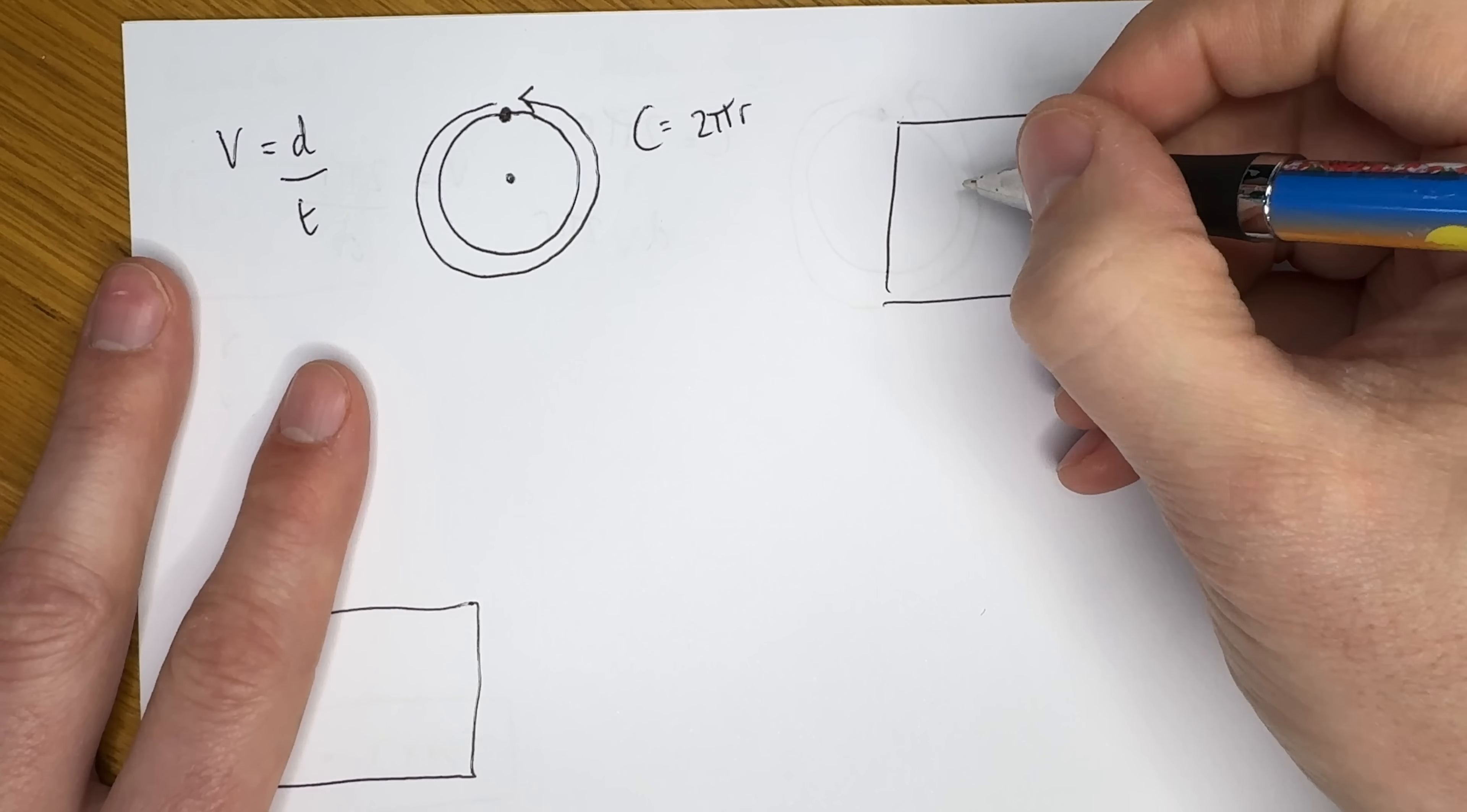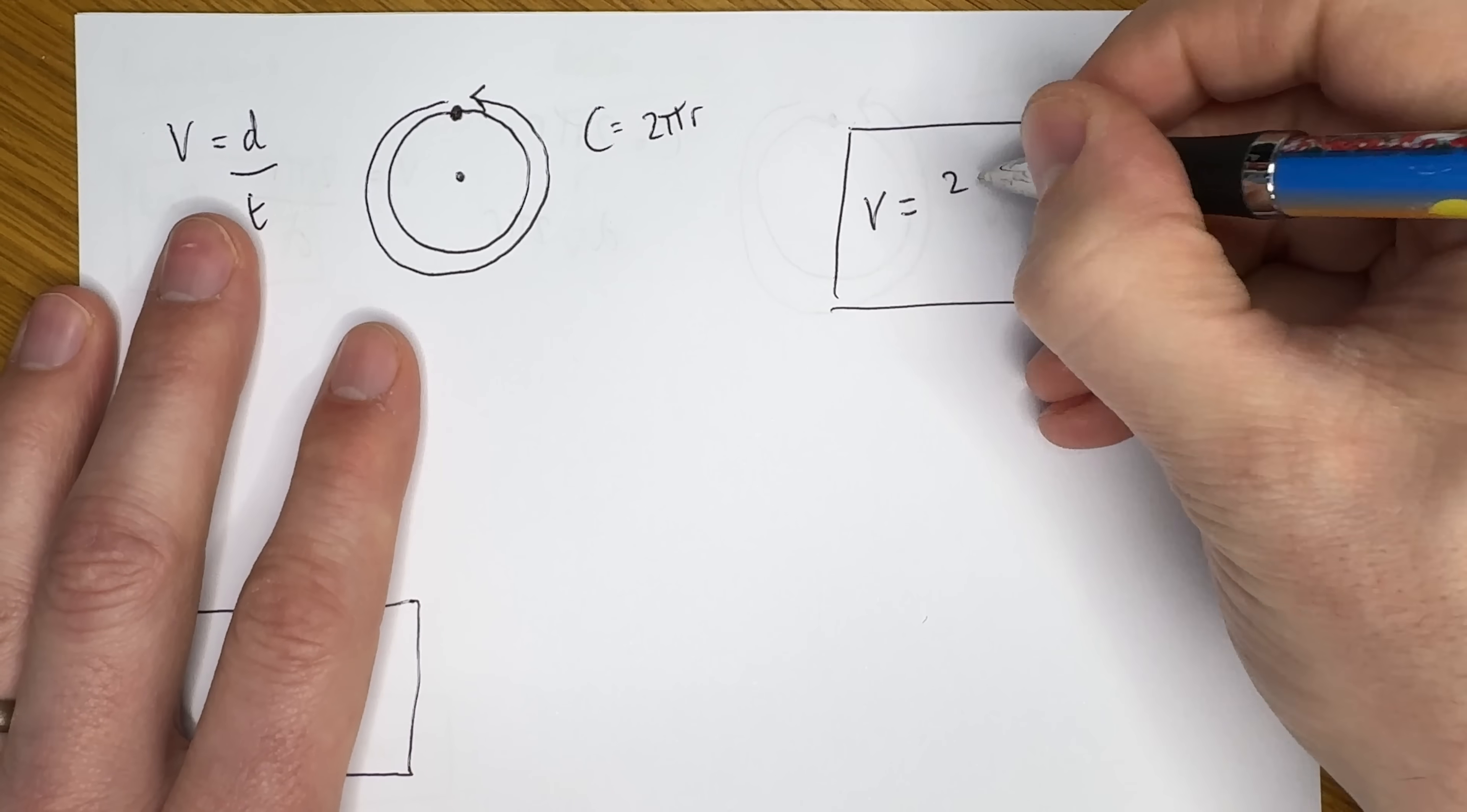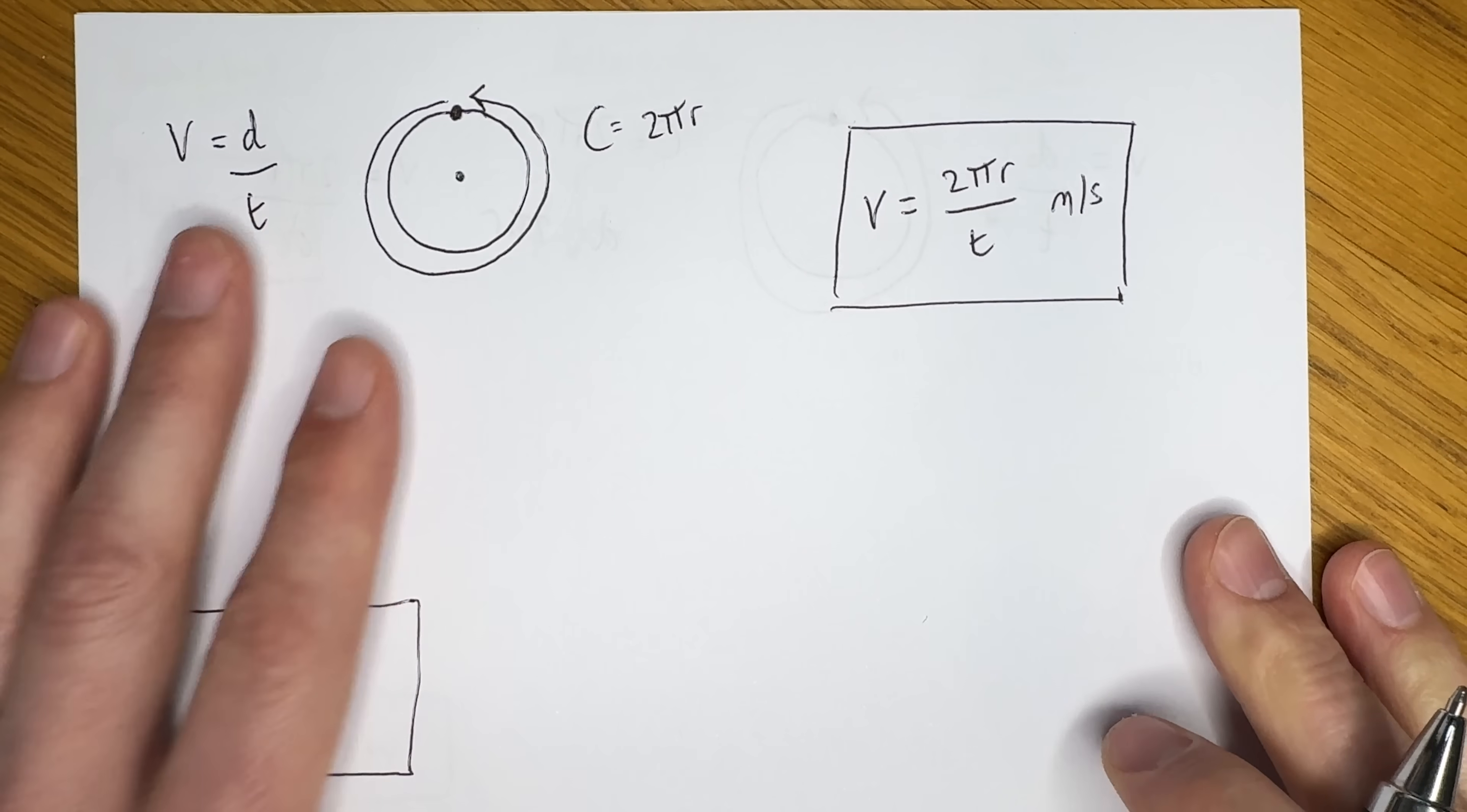if the point travels once around its circle, and we know the equation of circumference of a circle to be 2πr, then we can call 2πr our distance. And it takes a specific time, t, to do that full circle. So we can say with confidence then that v, or velocity, is 2πr divided by t, and that will be in metres per second.